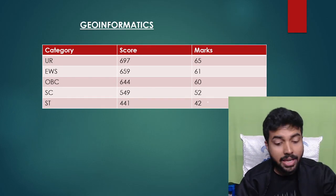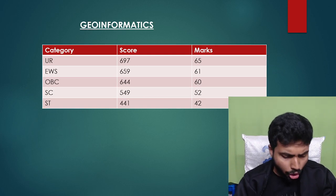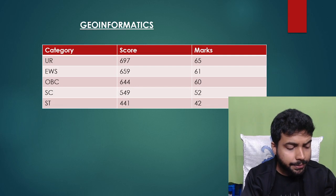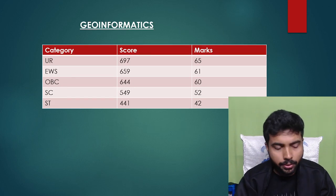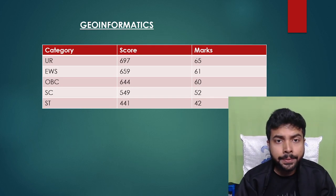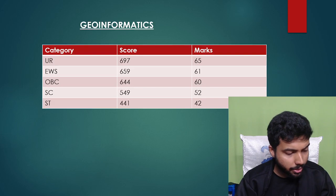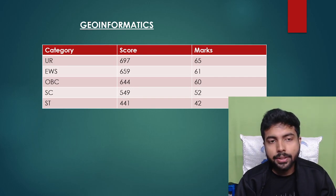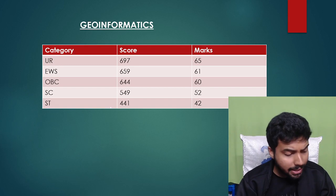Geoinformatics is a very emerging branch. The last cutoff was near 700. One of my students got into IIT Kanpur Geoinformatics with around 64 to 65 marks. For EWS, 659 gate score is required, around 61 marks. For OBC, 644 gate score is needed, about 60 marks. For SC, 549 score and 52 marks. For ST, 441 score and 42 marks.